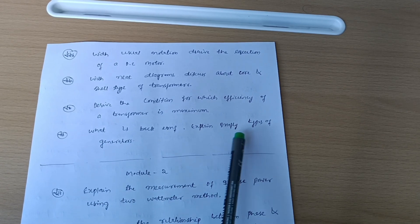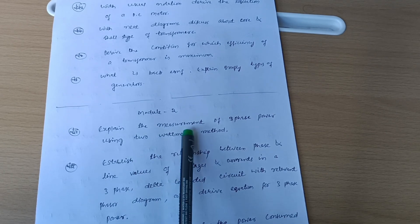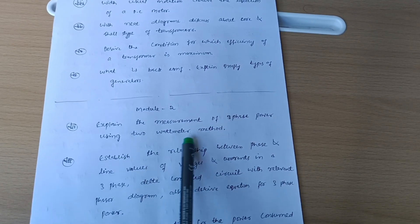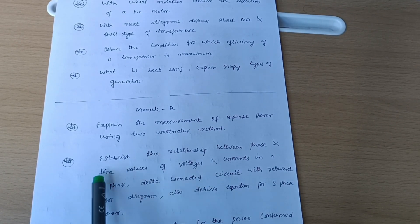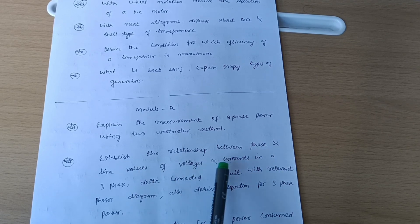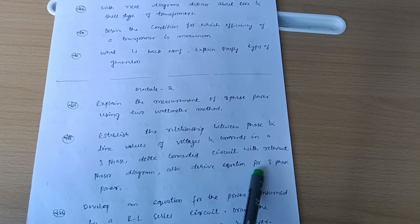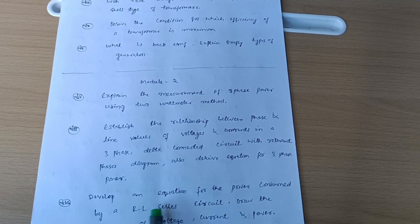Next is Module 2. Explain the measurement of three-phase power using two wattmeter method. This is super important one. Establish the relationship between phase and line values of voltage and currents in a three-phase delta connected circuit with relevant phasor diagram. Also derive equation for three-phase power.